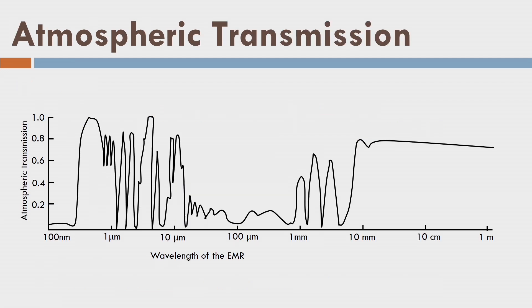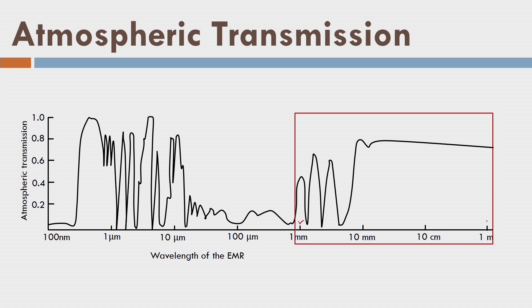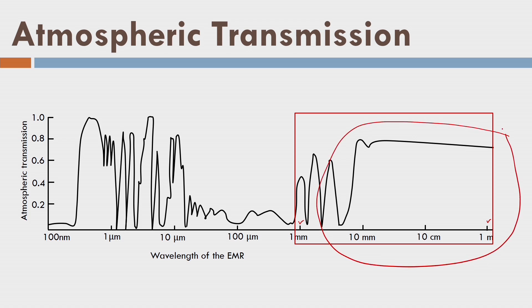This is the electromagnetic spectrum. The microwave region ranges from 1 mm to 1 meter. A major portion of this electromagnetic spectrum region is transparent to the atmosphere, which means a radar signal sent from the earth's surface will pass through the atmosphere and reach a satellite. Similarly, a radar signal sent from a satellite will be received at the earth's surface because the complete atmospheric window is available for this range — this region is called the microwave region.